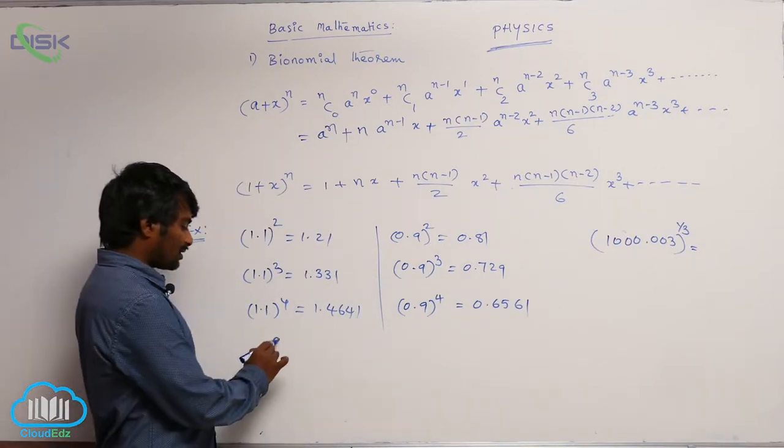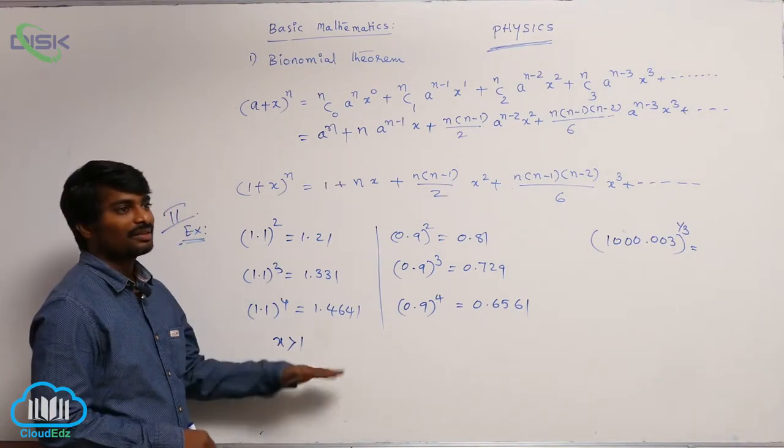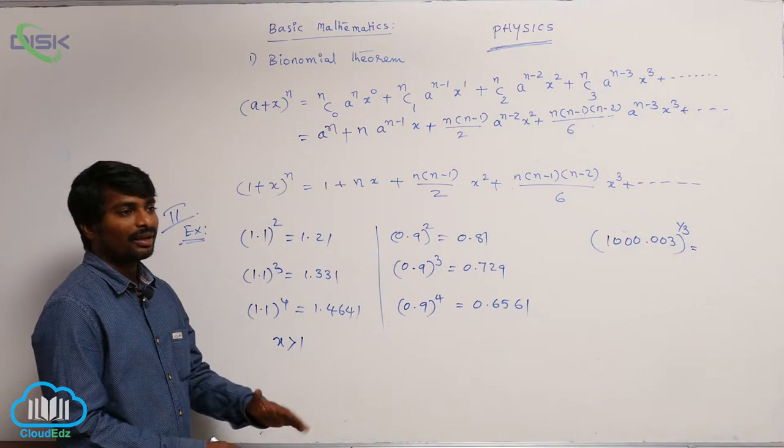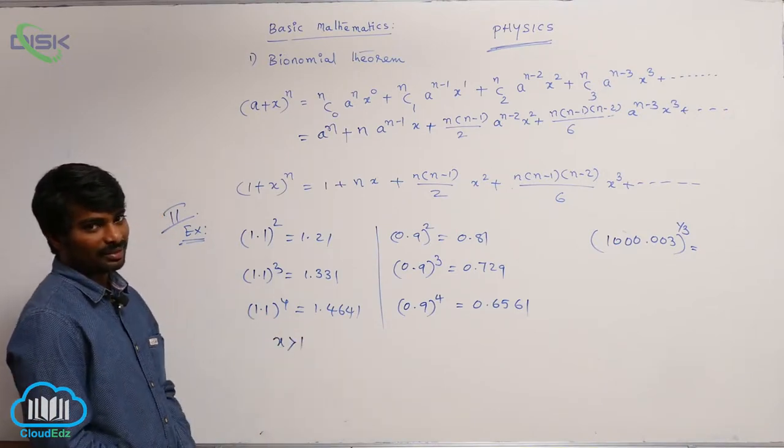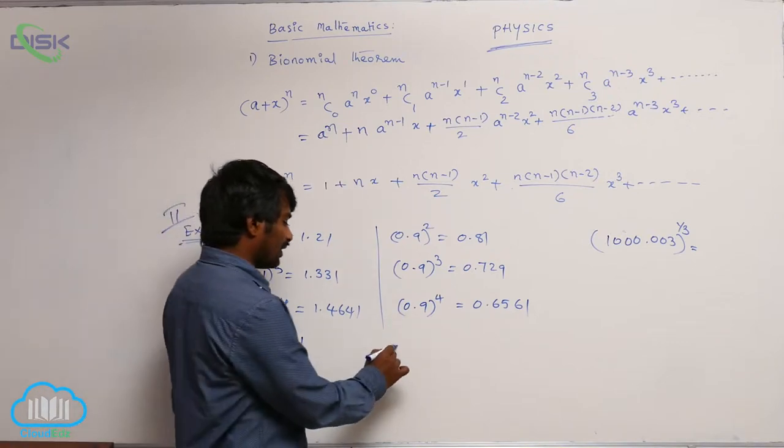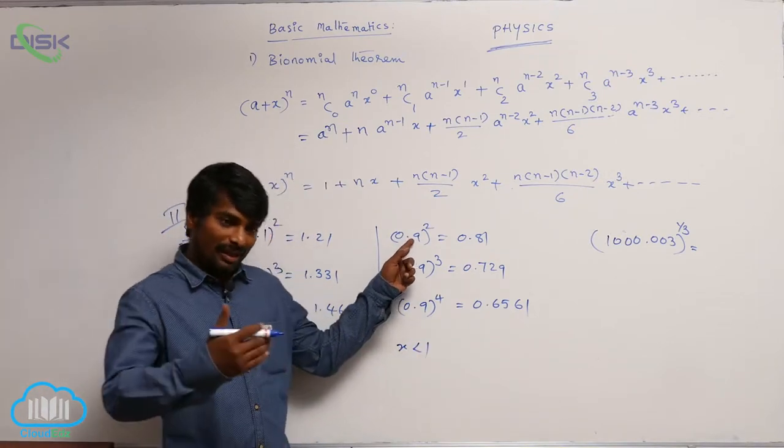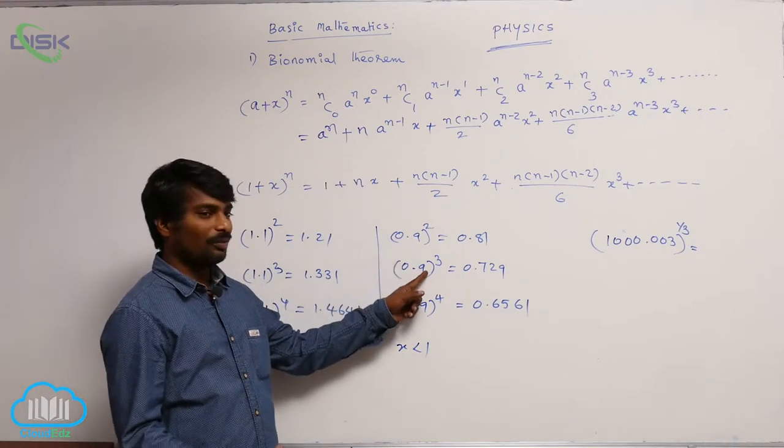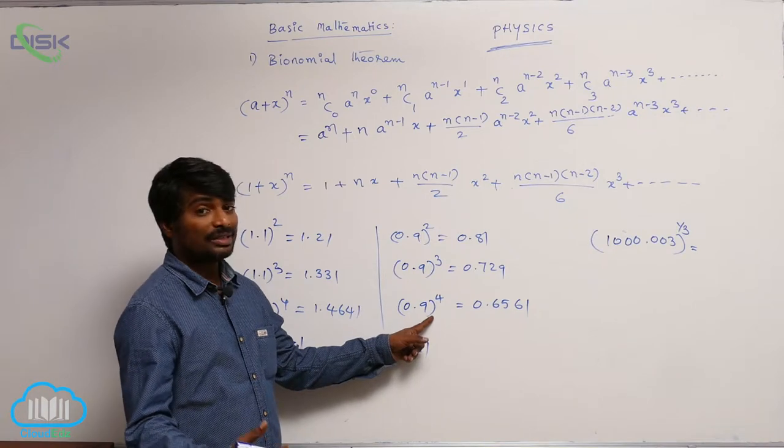That means, if x is greater than 1, x square value and x cube value, x power 4 value, those values are going on increasing. If x is less than 1, x square value again decreases and x cube value again less, x power 4 value is again lesser.